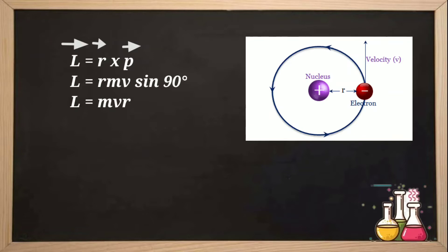So L equals m·v·r·sin θ, where θ is the angle between the two vectors — the velocity vector and the r vector. That angle is 90 degrees, because the radius always makes 90 degrees with the tangent. So sin 90 becomes 1, and therefore L equals m·v·r.